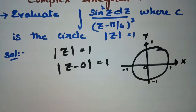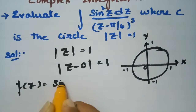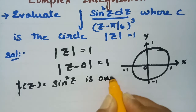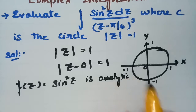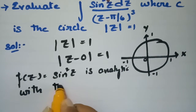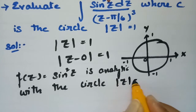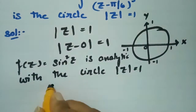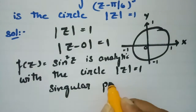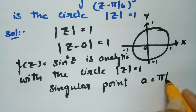Now, what is f(z)? Clearly f(z) = sin²z, which is analytic within the circle |z| = 1. The singular point a = π/6 lies within the contour.